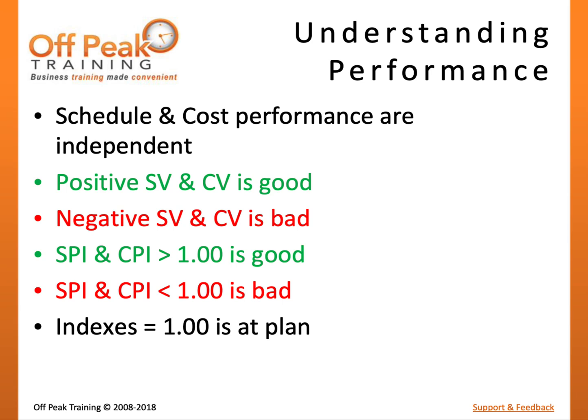It is important to understand that the performance measurements for cost and schedule are completely independent. One can be good while the other can be poor, and vice versa. The rule of thumb is that a positive variance equates to positive performance, such as ahead of schedule or under budget. A negative variance represents negative performance, and a variance equal to zero means performance exactly matches the plan. Similarly, performance indexes greater than 1 represent good performance, while indexes less than 1 represent poor performance. An index equal to 1 means performance exactly equals the plan.